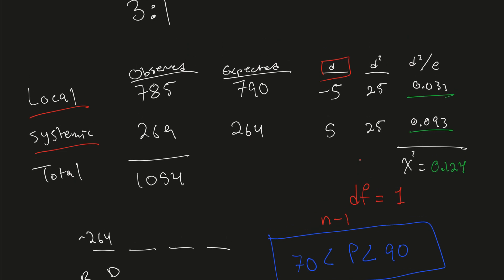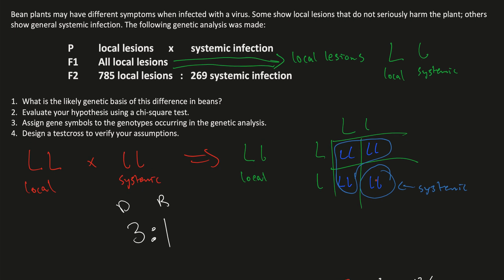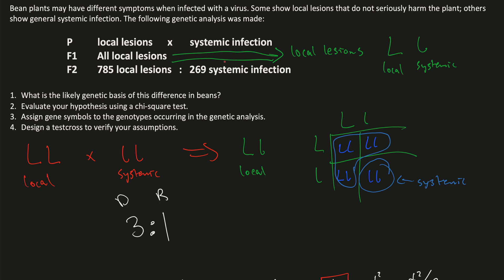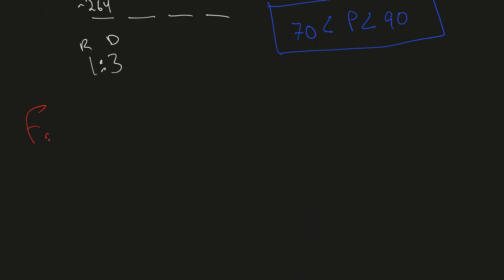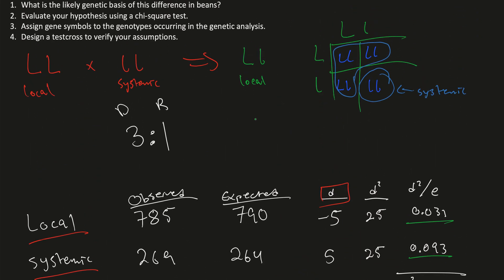How do we design a test cross to test our assumptions? We want to confirm we have at least one-fourth homozygous dominant and one-fourth homozygous recessive in F2. In the F2 generation, if a plant is little l little l, we know it has systemic infection — there's only one genotype for systemic infection. However, if we have big L but don't know the second allele, we get local lesions. So how do we determine if the genotype is big L big L or big L little l? We have one of three options: big L big L, big L little l, or big L little l.